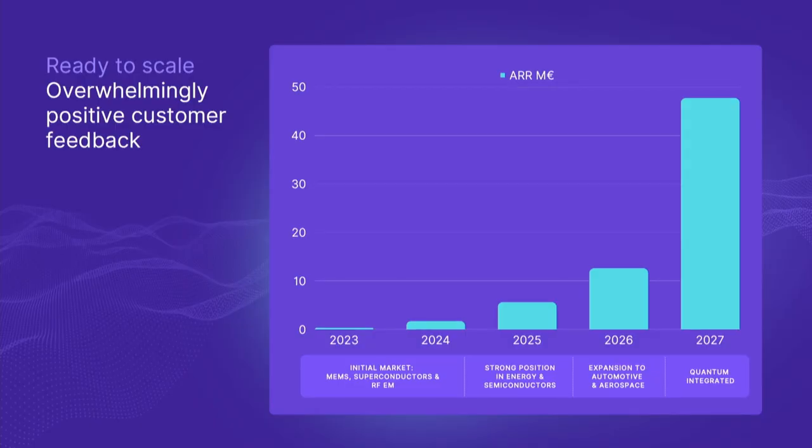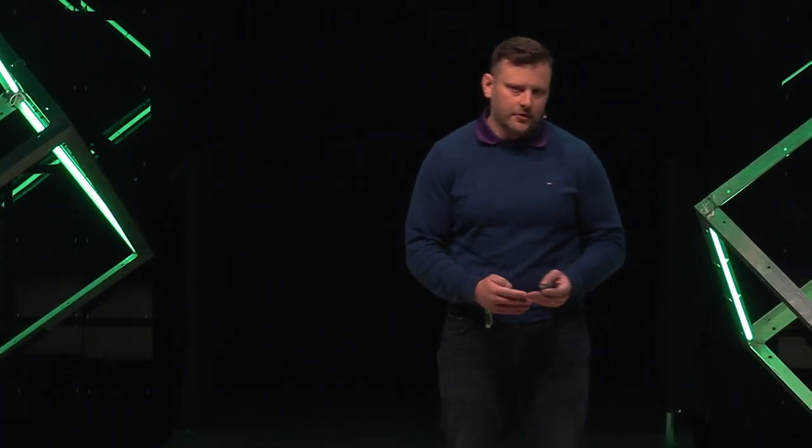We closed our first deals in March this year and have since grown to about $200,000 in annual recurring revenue. In the next couple of years, we intend to solidify our position in energy and semiconductors, then expand to automotive and aerospace, and introduce our first quantum algorithms within the product in 2027 — which will essentially be a multiplier for everything.